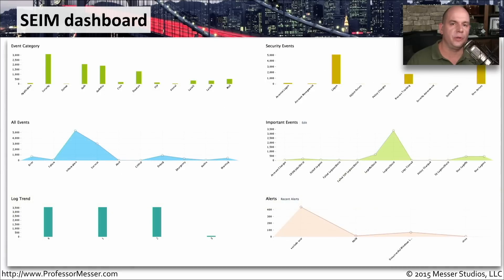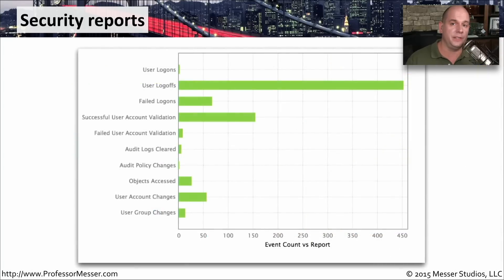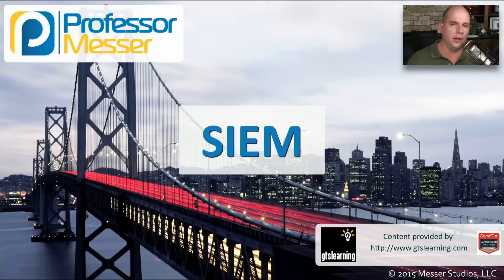Instead of looking through log files, you usually will have a dashboard that you can view in the SIEM. It will do the hard part of examining the data as it's coming through and will make a generally real-time perspective of things like the events, the logging, the utilization, and the traffic patterns you see traversing the network. If you wanted to do long-term reports, those are usually available in a SIEM as well. By examining the short-term and long-term views, you can now get a better understanding of exactly what's happening on your network.